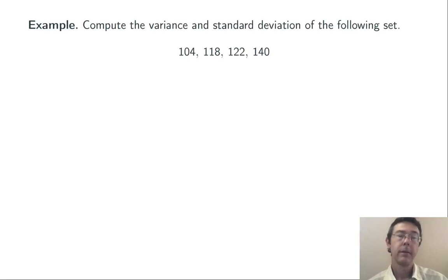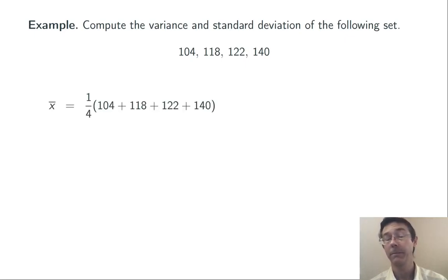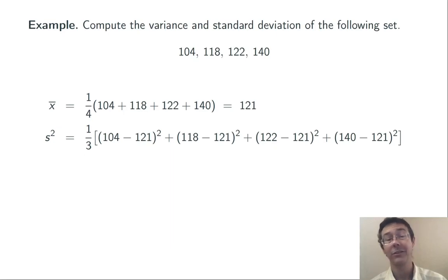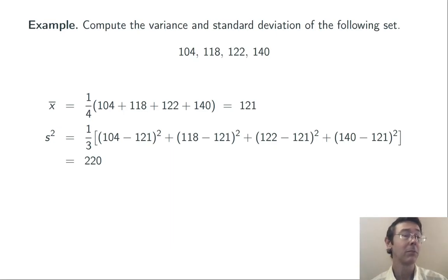Here's a quick example with a data set of just four values. Let's compute the sample variance and standard deviation. First we need the sample mean: we add up the four values and divide by four, giving us 121 — that's a measure of the center. For variance, we compute the squared difference between each value and the sample mean, add all of those up, and divide by three — one less than the number of values — giving us 220. Notice that number doesn't really seem to have much direct meaning relative to the actual values in our data set.